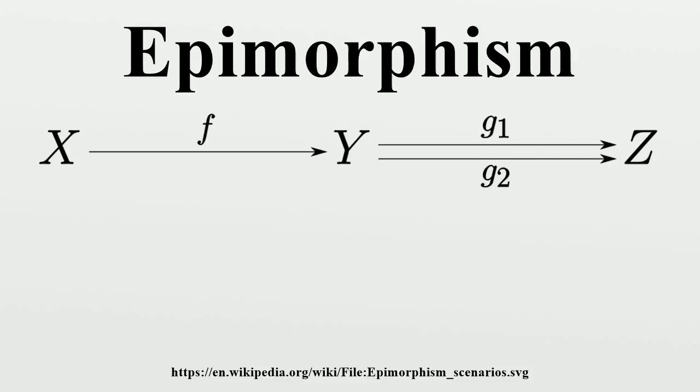Grp - groups and group homomorphisms. The result that every epimorphism in Grp is surjective is due to Otto Schreier; an elementary proof can be found in [reference]. FinGrp - finite groups and group homomorphisms, also due to Schreier. The proof given establishes this case as well.